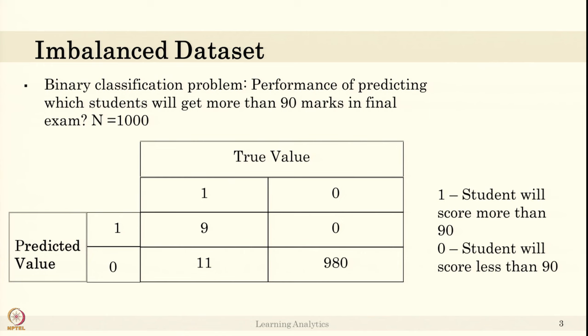Consider a binary classification problem, that is two classes: predicting which students will get more than 90 marks in final exam and which students will not. You have n equal to 1000 samples, that is 1000 students data from historical semesters and courses. As you know, there are very few students who will get more than 90 marks. The number will be very less.